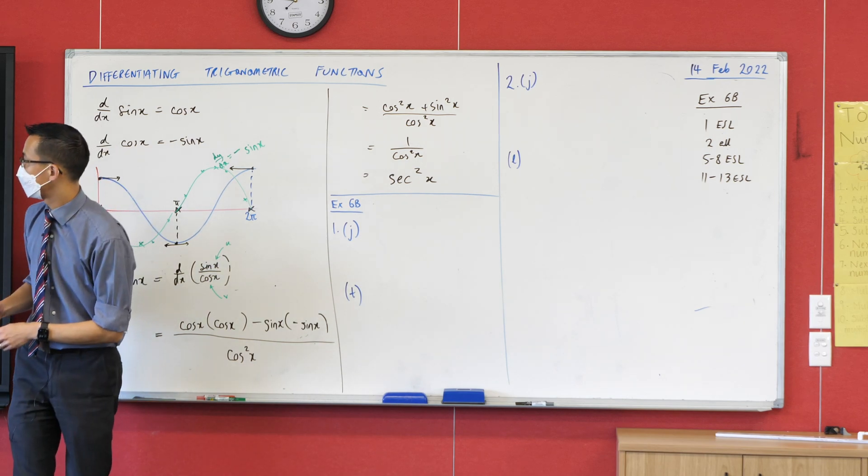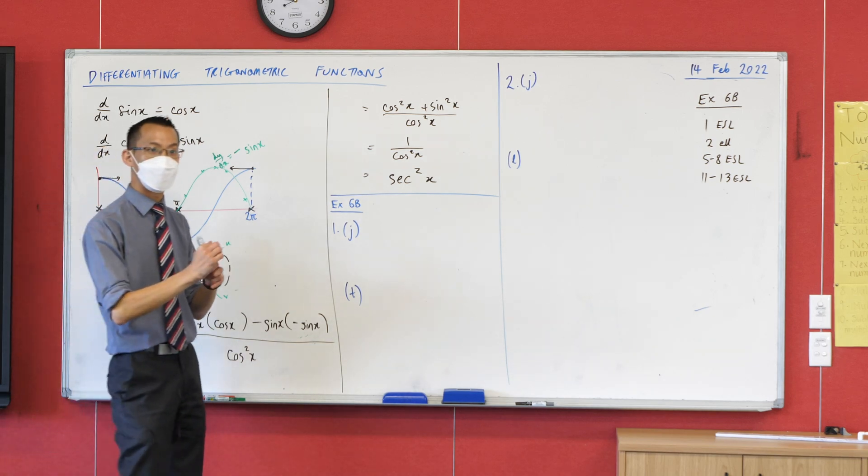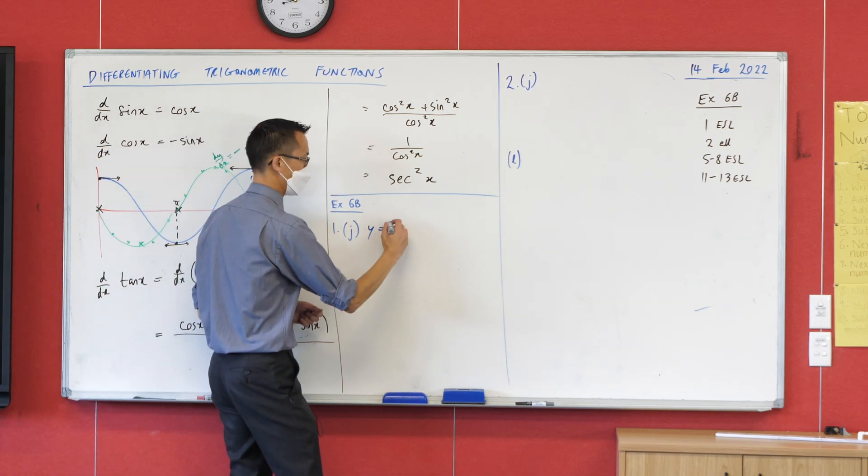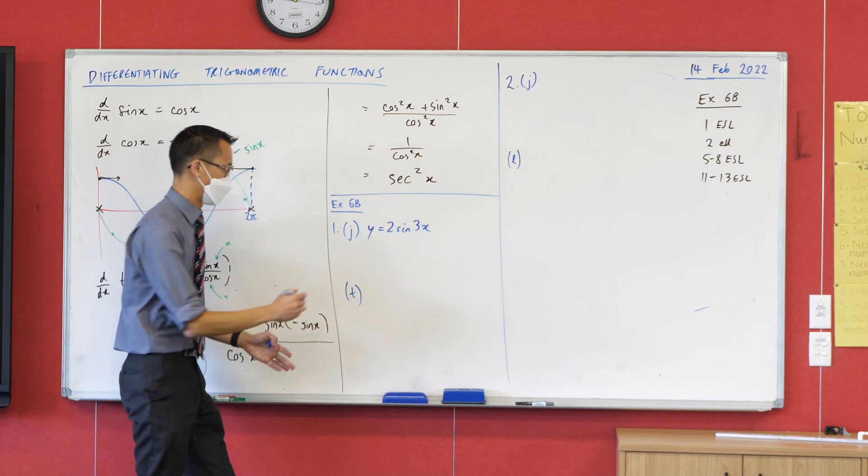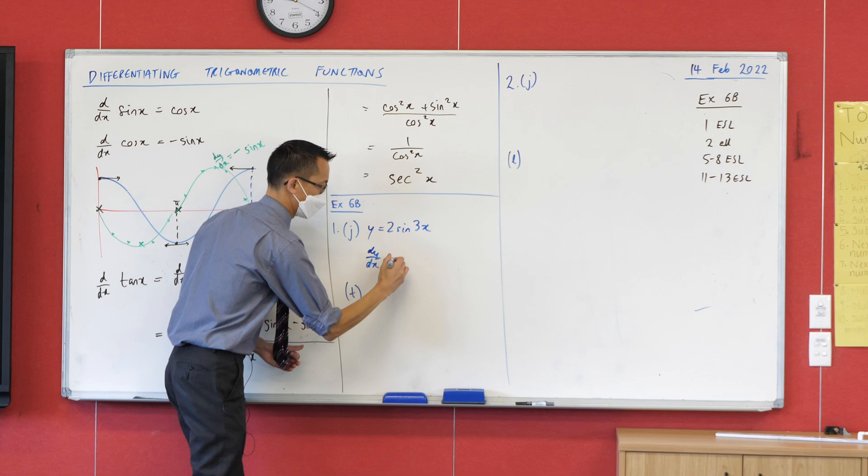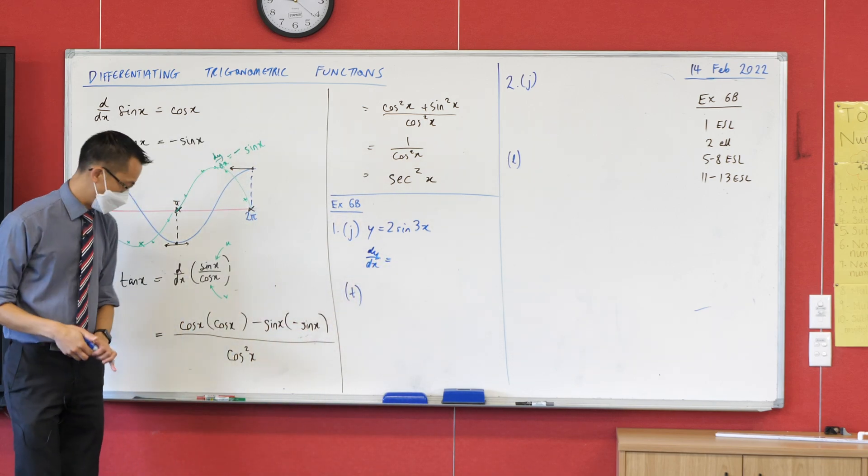Let's have a look at the ones I've selected. First 1j, so it's over there, y equals 2 sine 3x. So if we are differentiating this, dy on dx, let's just step through it one step at a time.